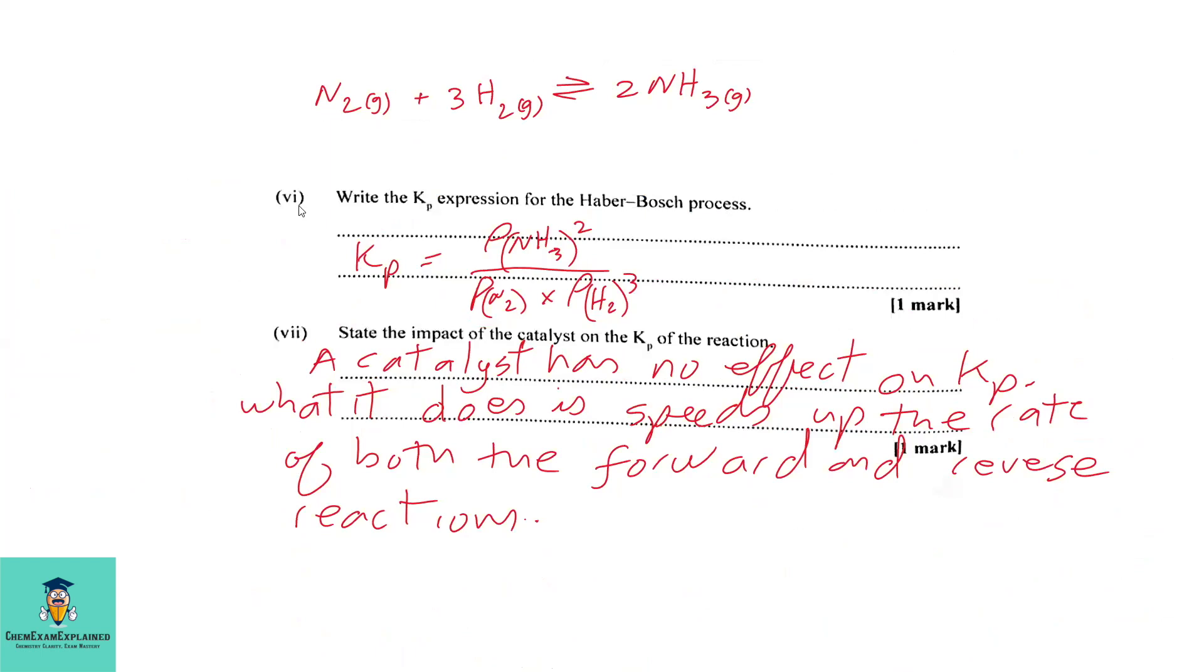Part 6: Write the Kp expression for the Haber-Bosch process. So we are going to write the expression using this equation. So Kp is equal to the partial pressure of ammonia squared divided by the partial pressure of N2 times the partial pressure of hydrogen cubed. Part 7: State the impact of the catalyst on Kp of the reaction. A catalyst has no effect on Kp. What it does is it speeds up the reaction rate of both the forward reaction and the reverse reaction.